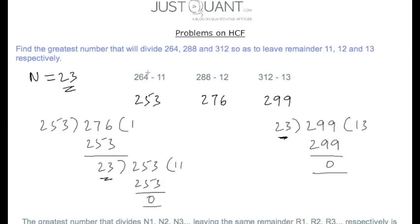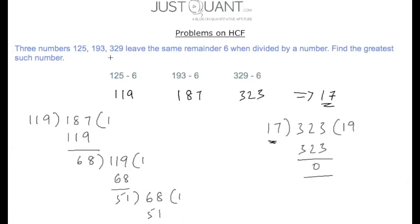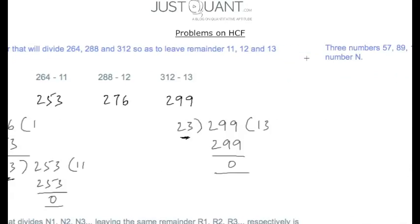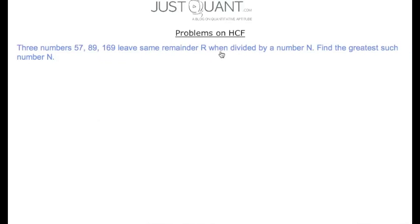In our next problem, there are three numbers 57, 89, and 169 that leave the same remainder r when divided by a number n. Find the greatest such number n. This problem is similar to the previous one, but in this case we do not know the value of the remainder.